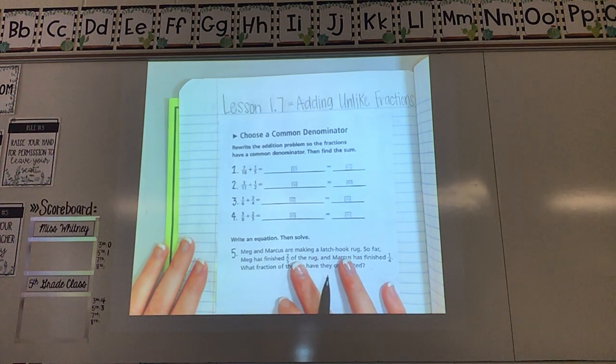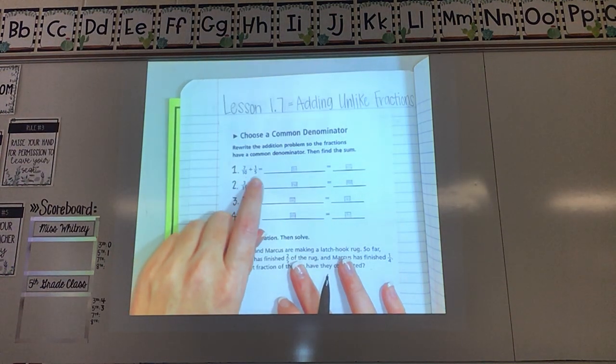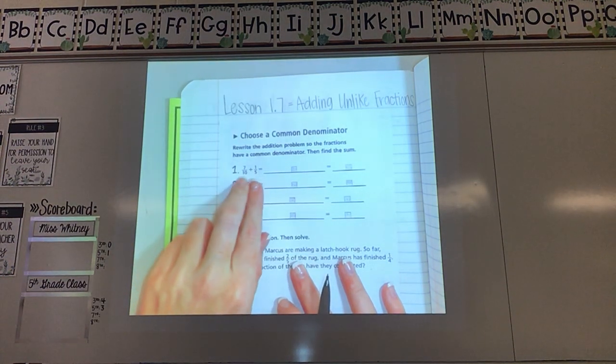We're just going to start with some practice problems because we should get the hang of it pretty quickly. We have 7 tenths plus 1 fifth. First, we want to look at the bottom numbers. Are they the same? No.